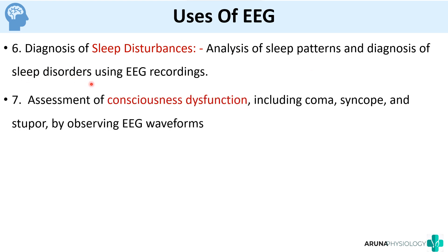You can also use EEG for assessment of conscious dysfunctions. Suppose the patient is in coma — to know whether the patient is in coma, syncope, or stupor, you can observe the EEG waveforms to identify in which state of consciousness the person is. So that concludes the uses of EEG.